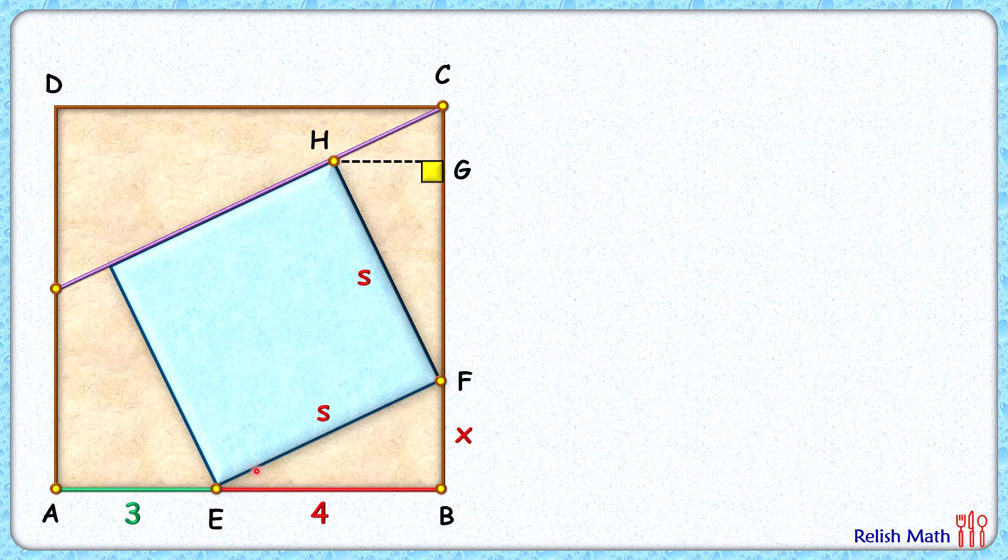Let's assume this angle here is theta degrees. This is 90, and this angle will be 90 minus theta. Again, this angle is 90, so this angle will be theta degrees, and this angle here will be 90 minus theta.